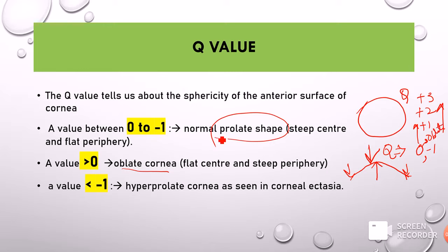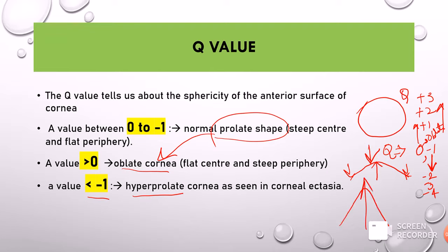From prolate, the cornea changes to an oblate cornea. This occurs usually after refractive surgery like LASIK, in which we make the prolate cornea into an oblate, flatter cornea. Sometimes Q values can be less than minus 1, going to minus 2, minus 3, minus 4 — meaning the cornea is hyperprolate, where the steepness increases. This is seen in corneal ectasia. So anything above 0 or below minus 1 is abnormal, and specifically below minus 1 indicates corneal ectasia.